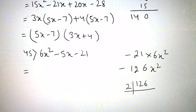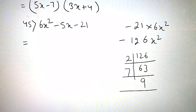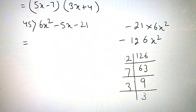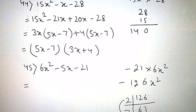Now we factorize 126. Divide by 2 to get 63, divide by 7 to get 9, and 9 is 3 into 3. We need the middle term minus 5x, so 14 minus 9 gives 5x, and 14 into 9 gives 126x square.